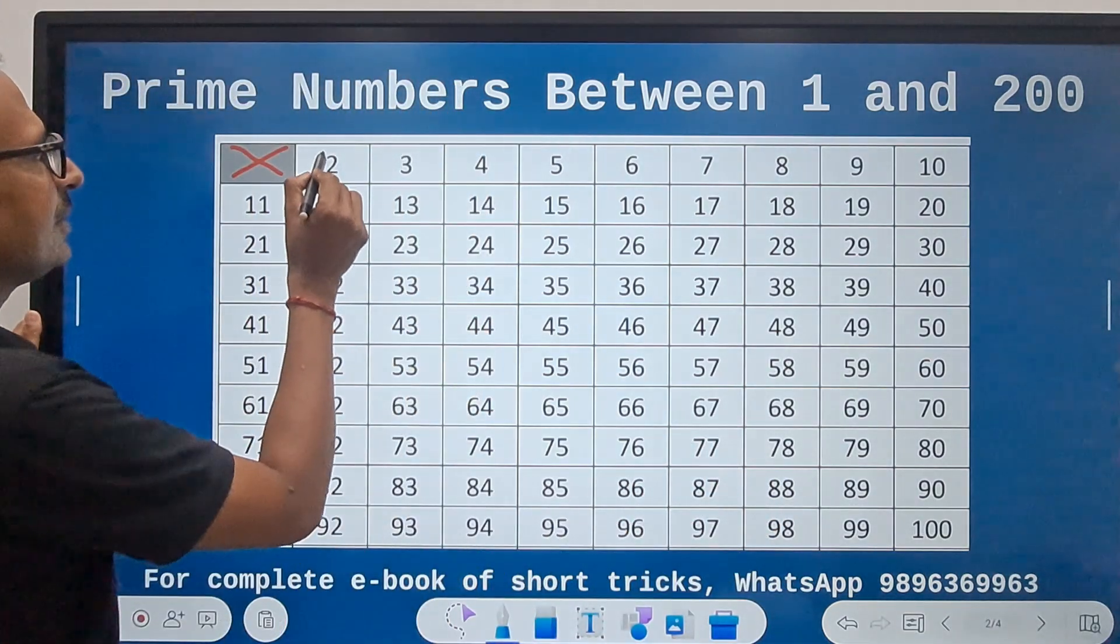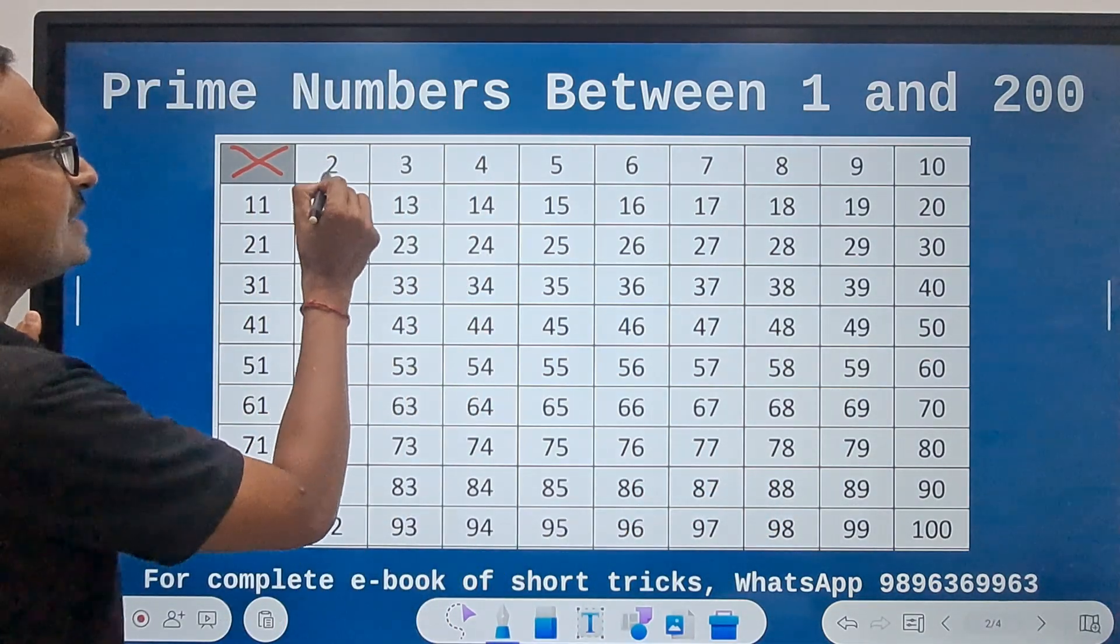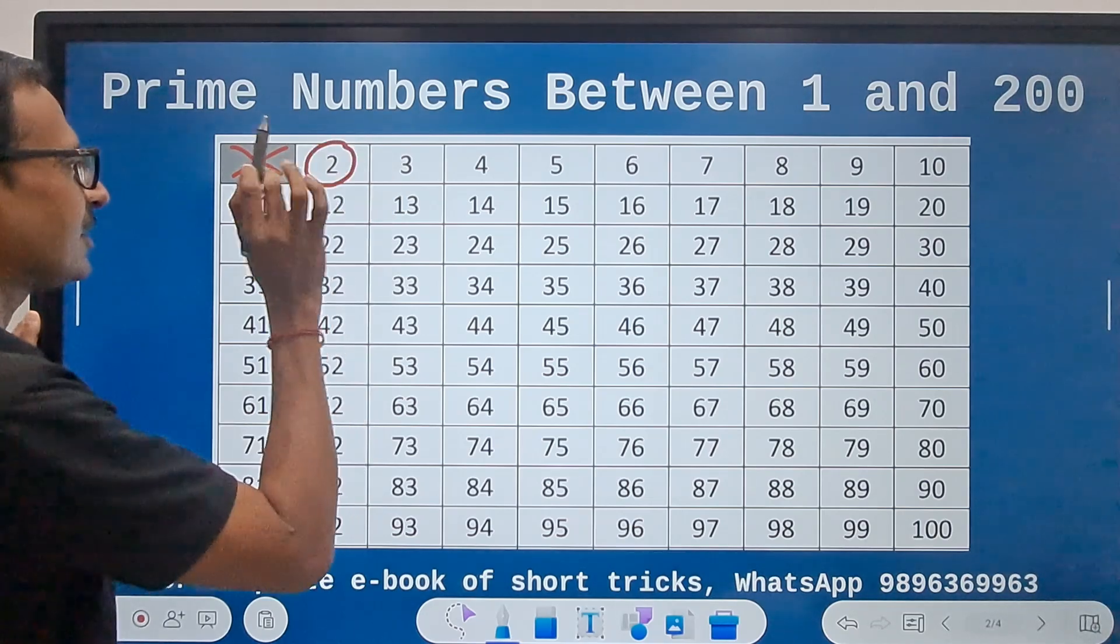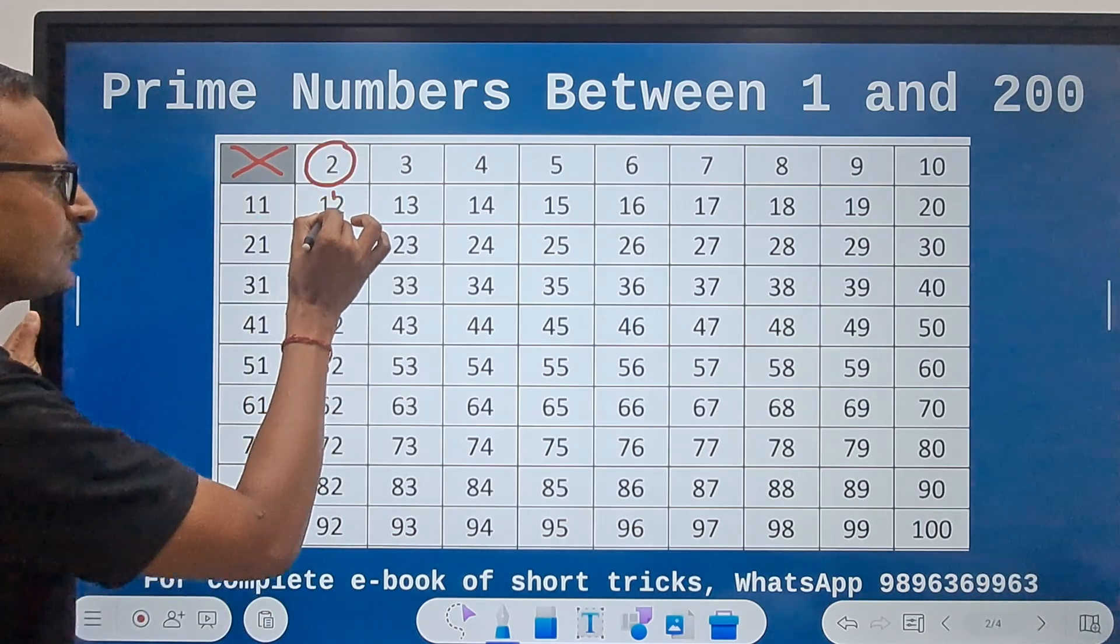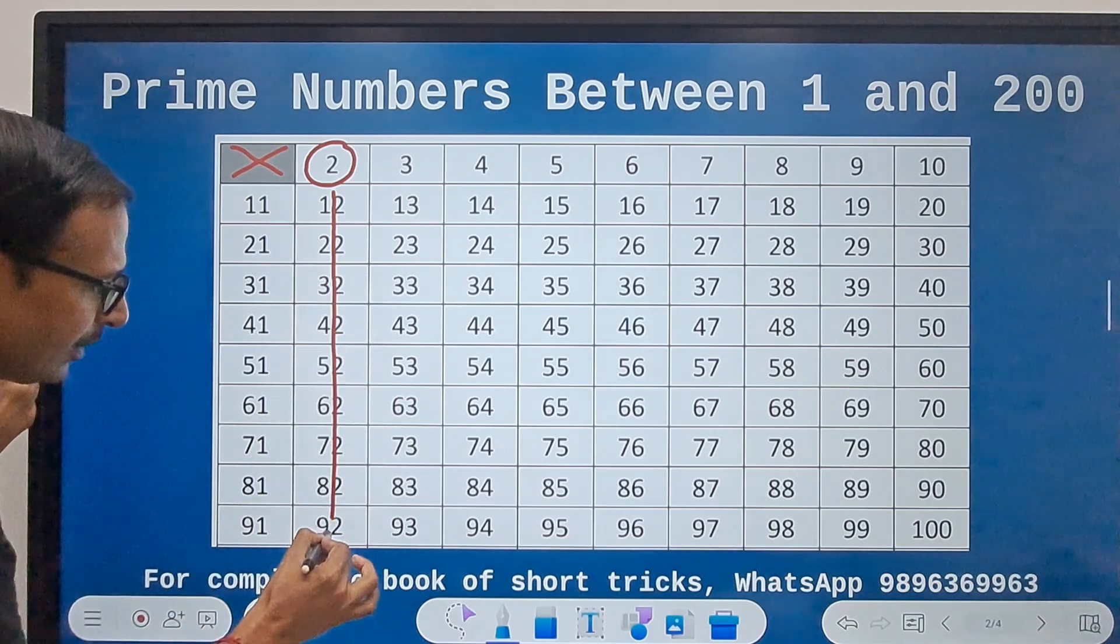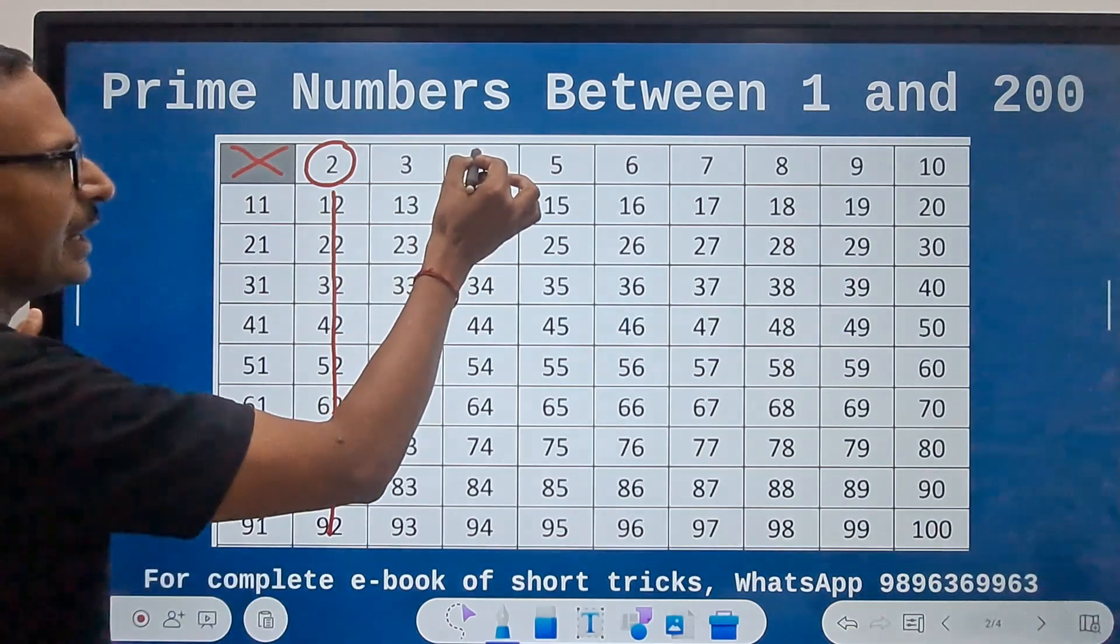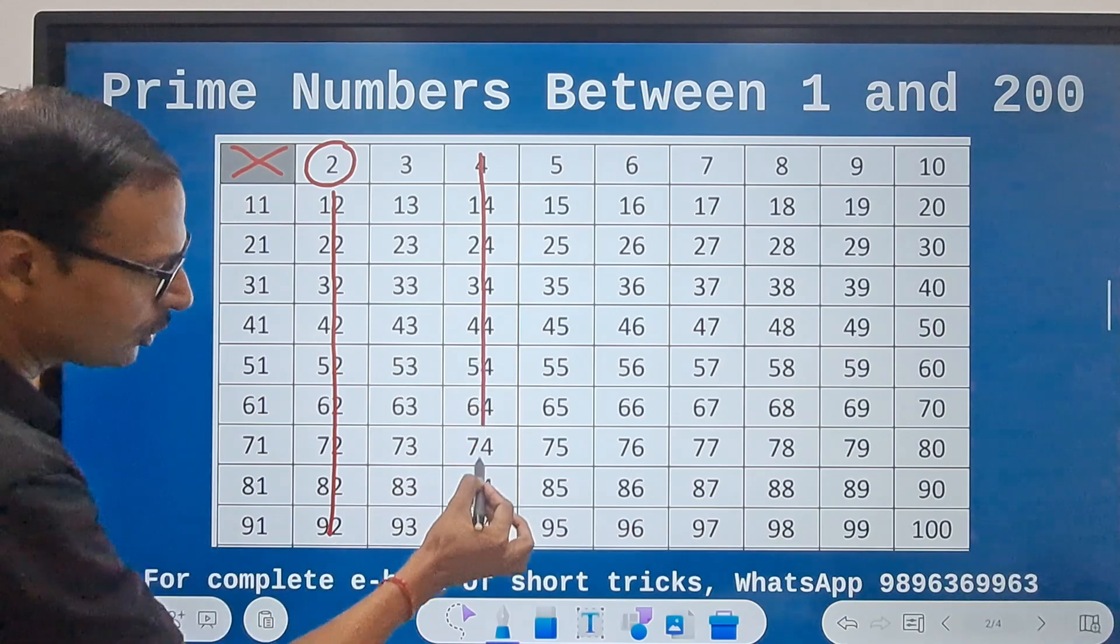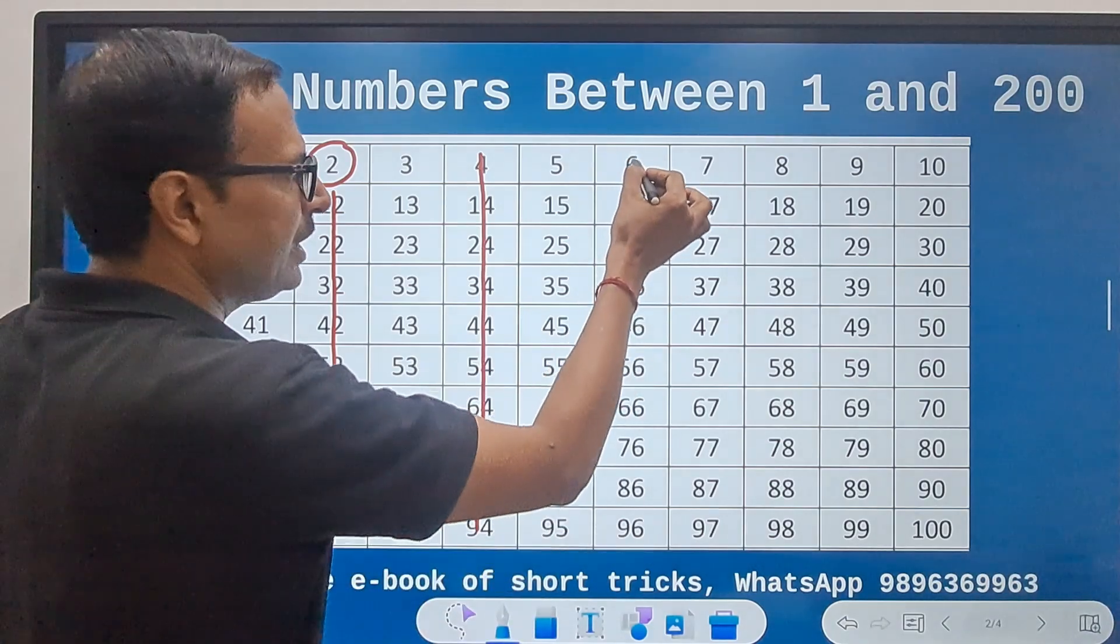For even numbers, 2 is a prime number, so I am going to encircle the 2, but all the numbers which fall in the 2 times table are ruled out because they cannot be prime.